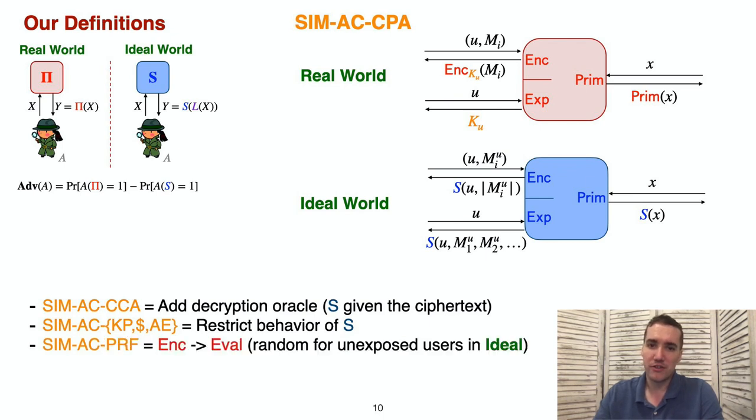Our PRF definitions work similarly. The encryption interface is replaced by an evaluation interface. And for unexposed users, random values are returned at this interface in the ideal world. As discussed, we used our definition to prove the security of several applications.